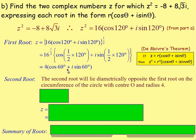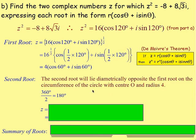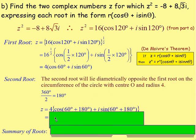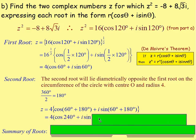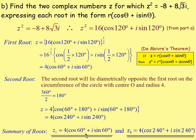The second root lies diametrically opposite the first on a circle of radius 4. The full circle is 360° divided by 2, so the roots are 180° apart. Take the first root's argument and add 180°: cos(60+180) + i·sin(60+180) = cos240 + i·sin240. So the two roots are 4(cos60 + i·sin60) and 4(cos240 + i·sin240).